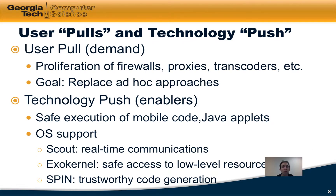On the flip side, we had technology push or enablers. There was a lot of research and technology being developed in support of safe execution of mobile code. In particular, Java applets were emerging and provided the ability to develop portable code that could run in one place or another, allowing shipping code around — a very natural supporting technology for active networks. Also, various operating system support was being developed: the Scout OS focused on support for real-time communications, the exo-kernel developed technologies to allow safe access to low-level resources, and SPIN focused on providing technologies enabling generation of trustworthy code.